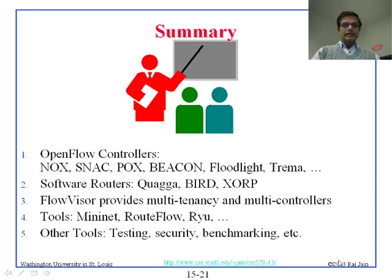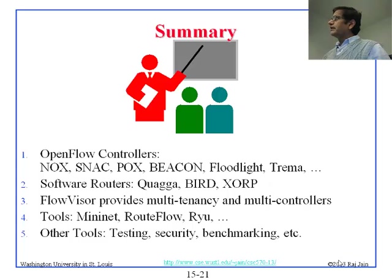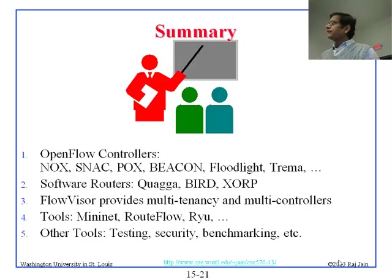That brings us to the end. Summary: first, remember these controllers — NOX, FOX, Beacon, Floodlight, TREMA, and SNAC, which is the graphical interface for NOX. Right now, FOX and Floodlight are probably remaining but they are also going to go away soon. TREMA is from a Japanese company and might be used in some production environments. For software routers we have Quagga, BIRD, and XARP — Quagga is very famous. FlowVisor is used for multi-tenancy and multiple controllers. In terms of tools: MiniNet is for emulation, RouteFlow is for routing, and RYU is for OpenStack integration.